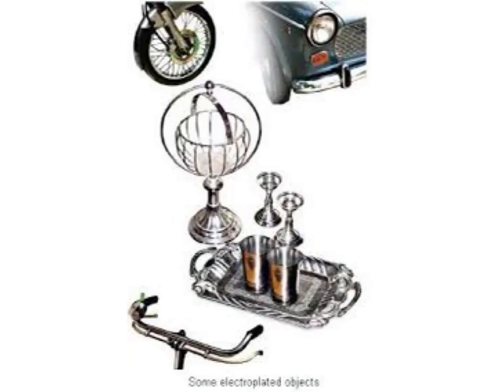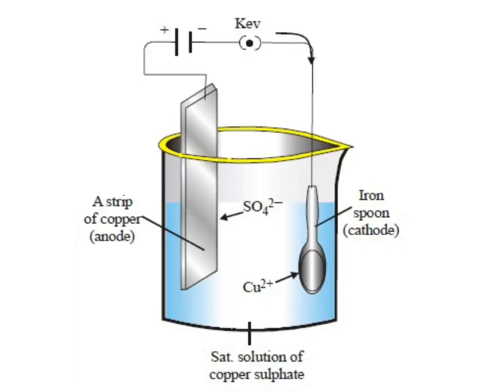While electroplating, we should keep a few points in mind. First, the metal object on which electroplating is to be done is made the negative electrode. Second, the metal whose layer is to be deposited is made the positive electrode. Third, a water-soluble salt of the metal to be deposited is taken as the electrolyte.